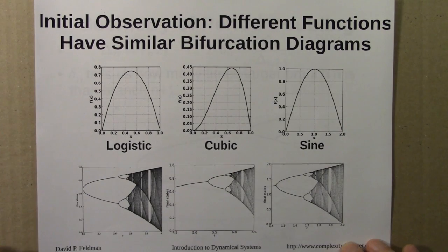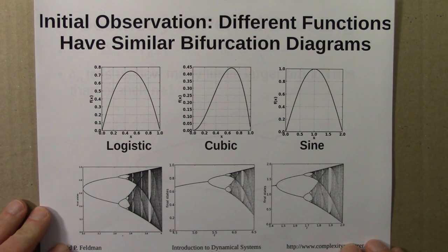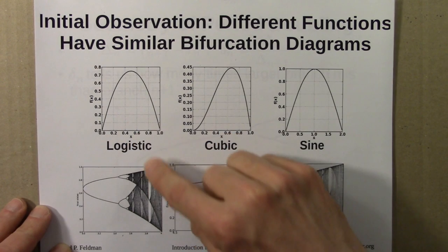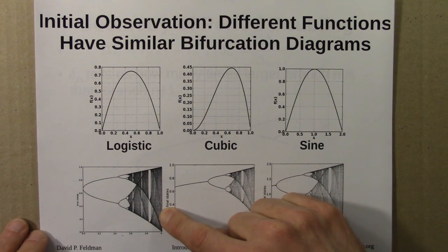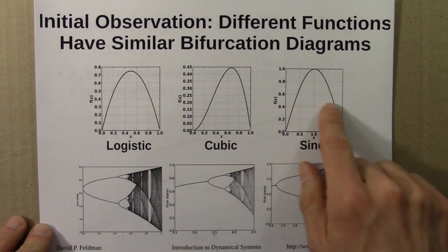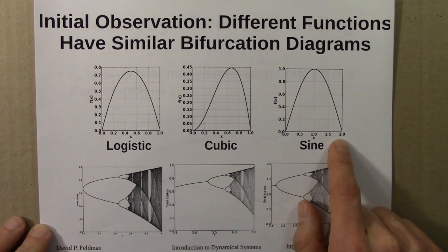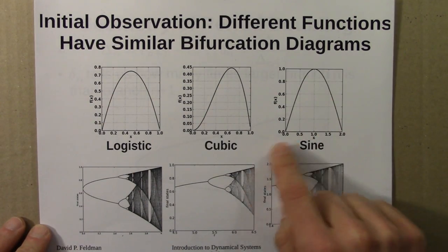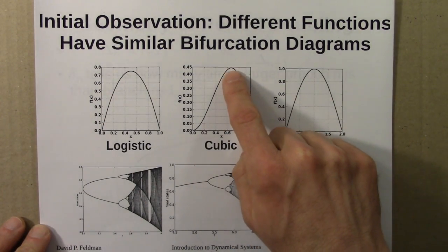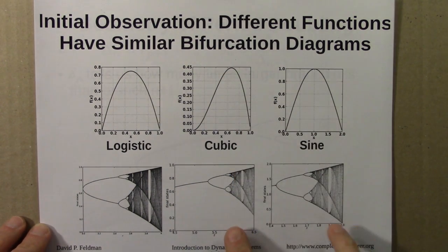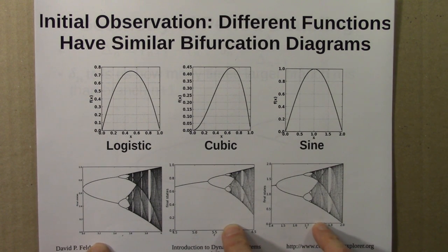I began with an observation: different functions have similar bifurcation diagrams. We looked at the logistic equation in previous units and explored its bifurcation diagram in quite some detail. But in this unit, we looked at two other functions, the cubic function and the sine function. These functions are all similar in that they have a single maximum, and that maximum is not pointy — it's quadratic-like. But they have very similar looking bifurcation diagrams. They're not absolutely identical, but they're very similar.